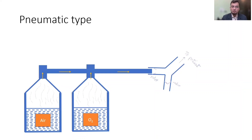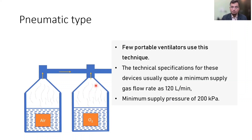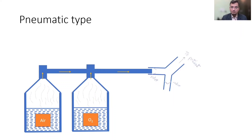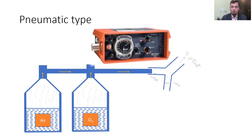In pneumatic-type gas flow generators, gas cylinders are connected to the inspiratory circuit and flow goes to the patient once the inspiratory valves open. Few portable ventilators use this type of technology. The technical specification for these devices usually quotes a minimum supply gas flow rate of about 120 liters per minute or a minimum supply pressure of 200 kPa. The main drawback is that if pressure drops, the power of the ventilator drops.